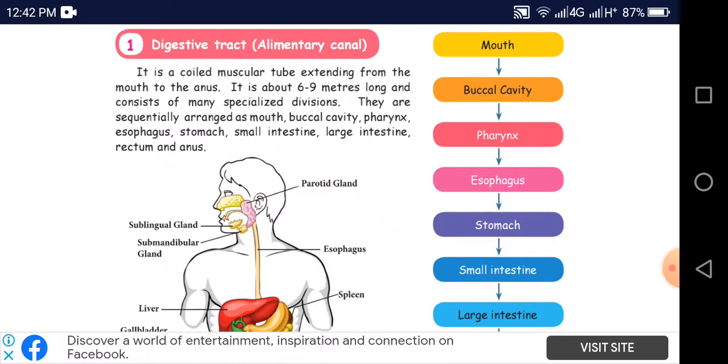They are subsequently arranged as mouth, buccal cavity, pharynx, esophagus, stomach, small intestine, large intestine, rectum and anus. That is Digestive Track, Alimentary Canal. One long tube.